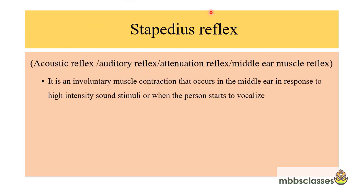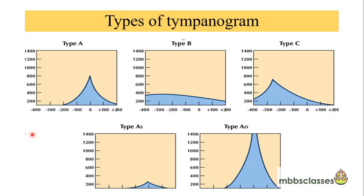Another parameter studied in tympanometry is the stapedius reflex, also called the acoustic reflex or middle ear muscle reflex. It is an involuntary muscle contraction occurring in the middle ear in response to high-intensity sound stimuli or when the person begins to vocalize. The stapedius reflex will be discussed in detail in the next video. The parameters of a tympanogram are: compliance, pressure peak, gradient, ear canal volume, and acoustic reflex.